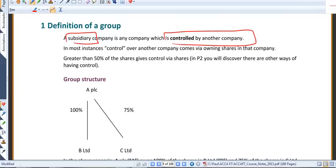What we're going to assume initially in this paper is that control comes via owning shares in another company. If you own more than 50% of the shares in a company, that effectively gives you a majority vote, and that majority vote gives you control.